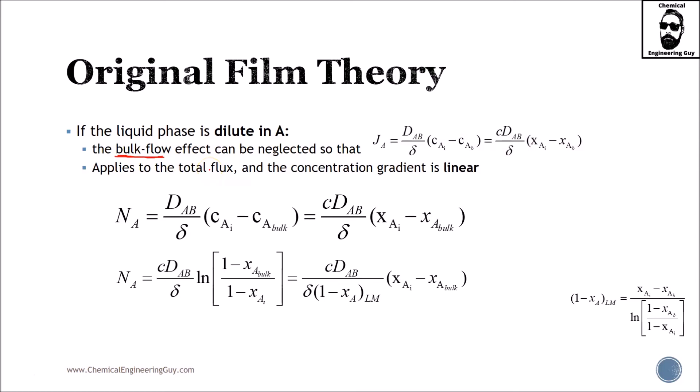This effect makes a simpler mathematical approach. The total flux of A or ammonia is given by diffusivity divided by the length of the film times the driving force, which is the change in concentrations between interface and bulk phase.